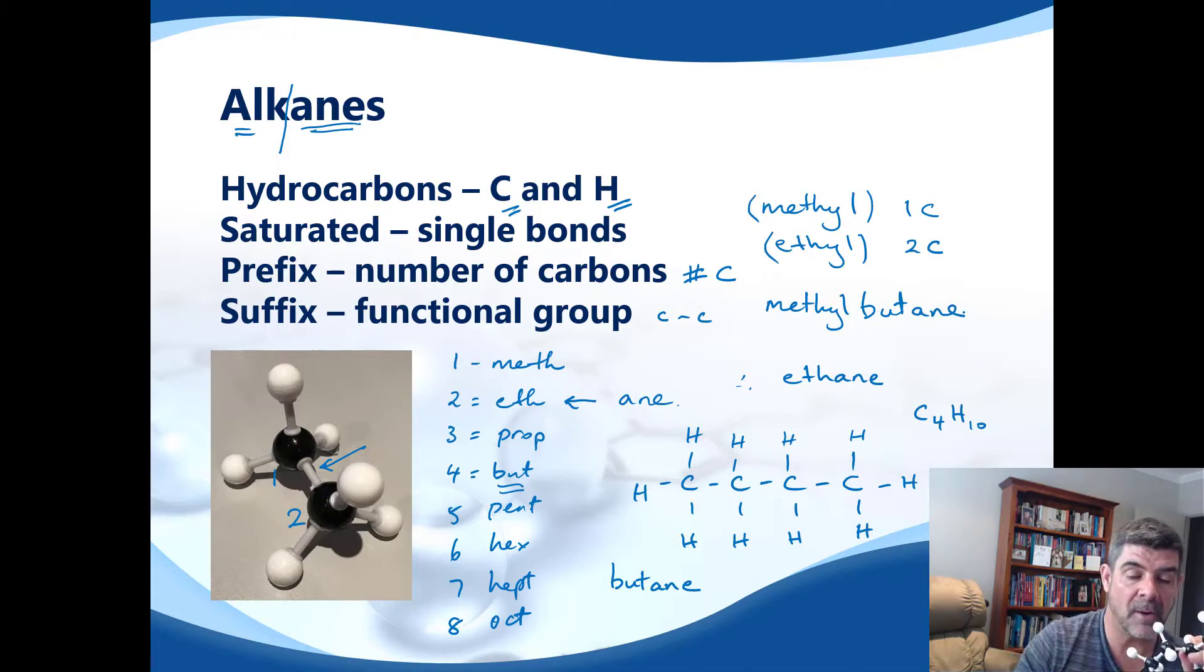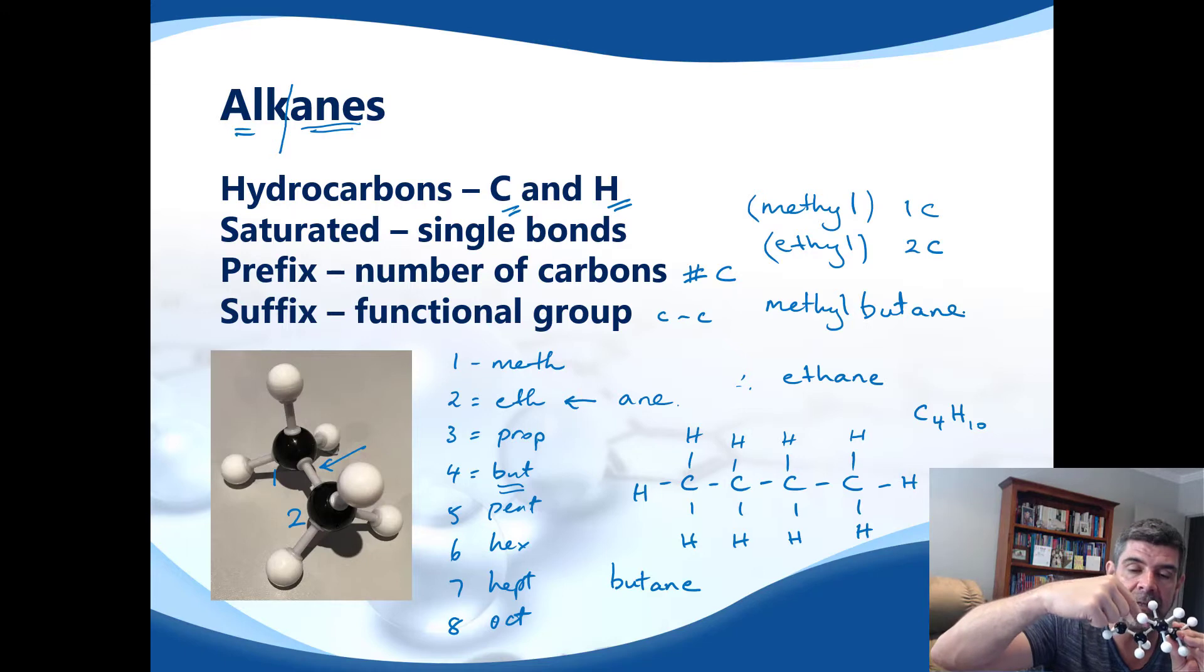Now, one extra complication which will arise as we get further into our nomenclature rules is that occasionally you may need to locate where that particular methyl group is. In this case, we know it can't be on an end carbon because that would increase the size of the chain and go from four to five carbons. And therefore we would have a pent rather than a but.